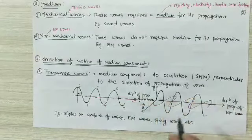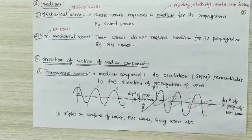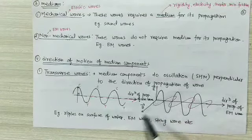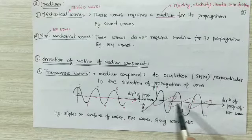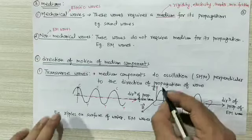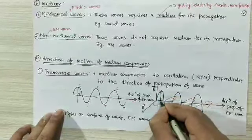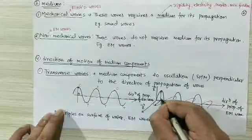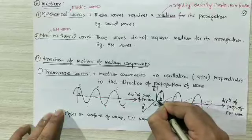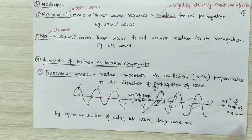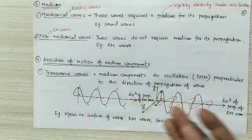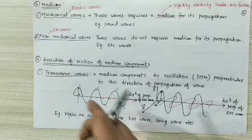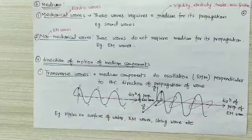Electromagnetic wave is also an example of transverse wave. In an electromagnetic wave, the electric field and magnetic field oscillate perpendicular to the direction of propagation of the wave. Both electric field and magnetic field are perpendicular to the direction of propagation. We will study this in deep detail later. Examples of transverse waves: ripples on the surface of water, electromagnetic wave, string wave, etc.